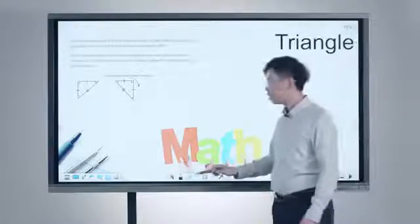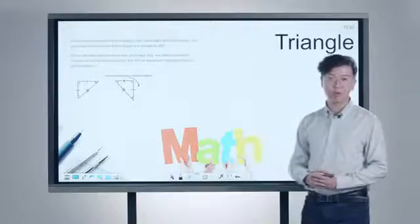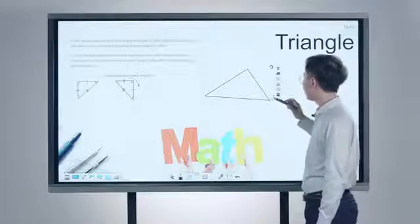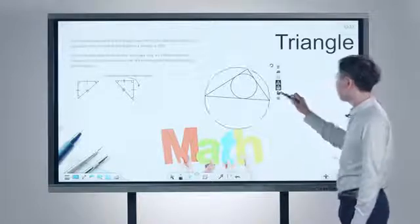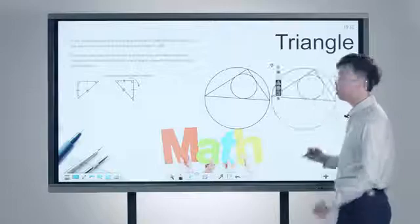In a geometry class, drawing a triangle no longer requires holding a ruler on the board. You can easily add in the inner circle, outer circle, and one key to duplicate the whole group shape.